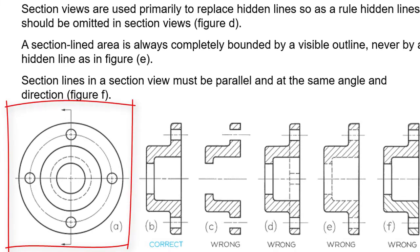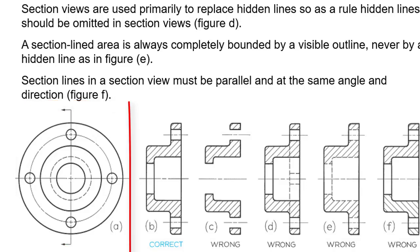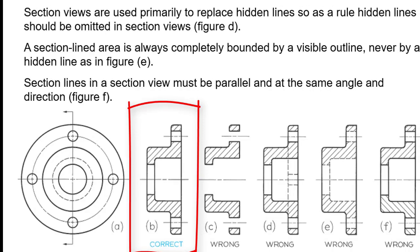A is the front view with the cutting plane line. B is the correct section view. C, D, E, and F are all wrong section views. We will introduce each error and mistake. Compare each wrong view with B, which is the correct section view.